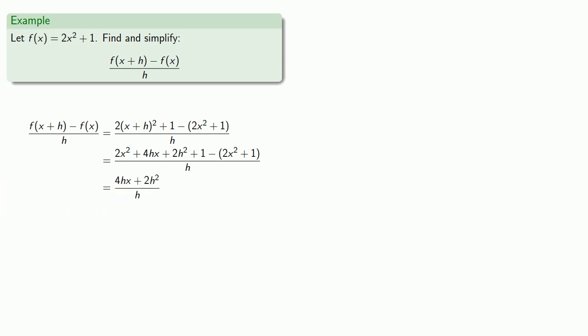So we can try to remove a common factor. But that requires us to actually have a factorization. So let's take a look at this numerator 4hx + 2h².